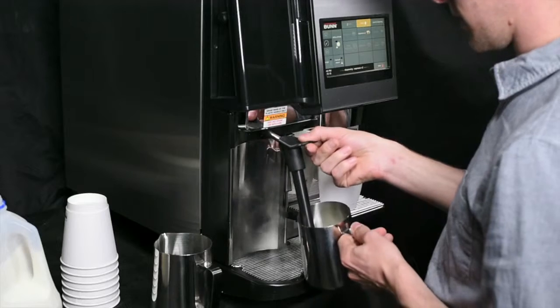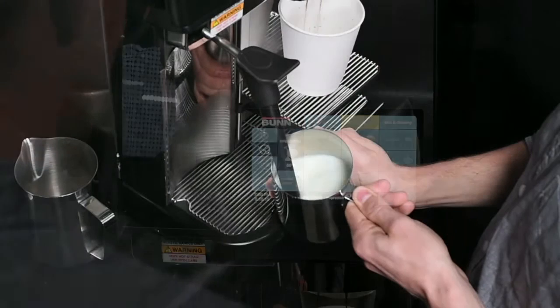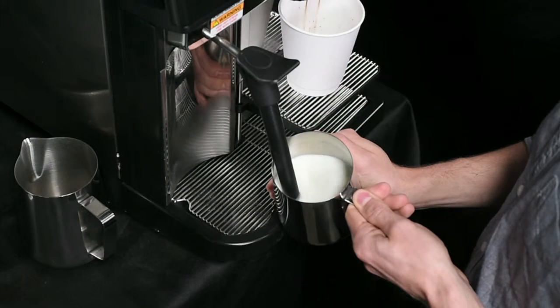Place the tip of the steam wand just below the surface of the milk and select the appropriate steaming function. The BUNN SureTamp will constantly monitor your milk's temperature during the steaming process.